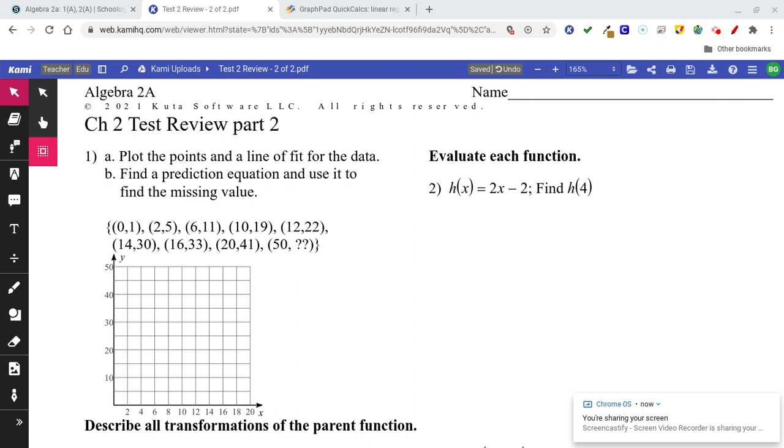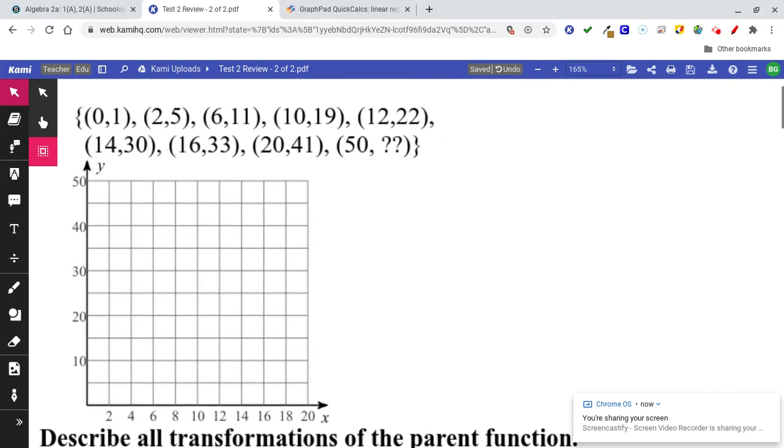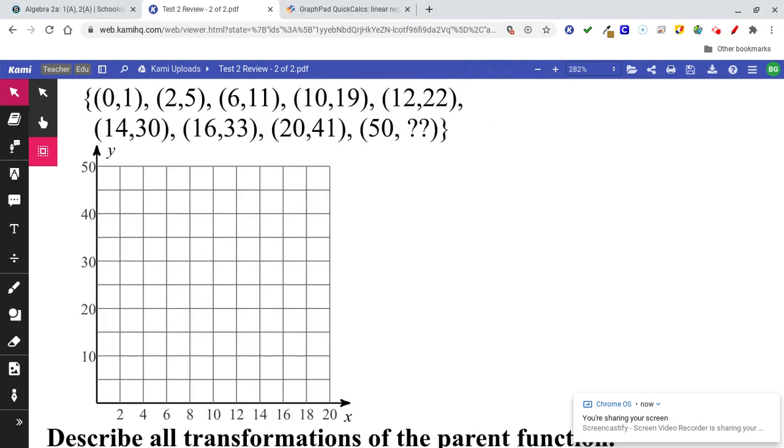Chapter 2, Test Review, Part 2. Number 1 says, plot the points and a line of fit for the data. Sometimes we see this written as a table, but here it's written as ordered pairs, but either way, it doesn't really matter.